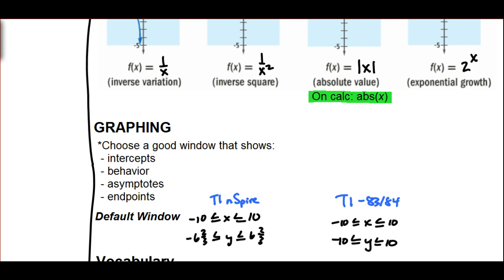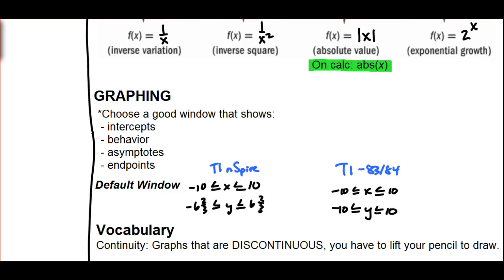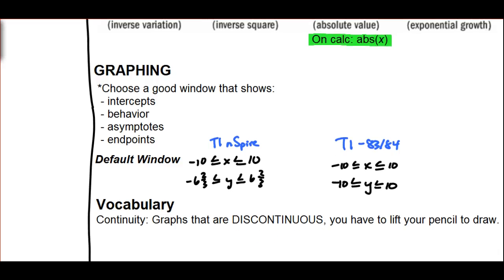The homework refers students to what kind of a default window their calculator has, and on the TI INSPIRE, the default window is simply from negative ten to ten for x, and from negative six and two thirds to positive six and two thirds for y. The default window or the standard window on a TI 83 or 84, which students may be using, is simply from negative ten to ten for both x and y. If students need assistance with their default window, they are more than welcome to ask questions of their teacher in class.